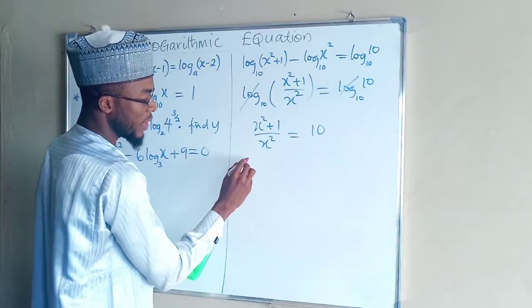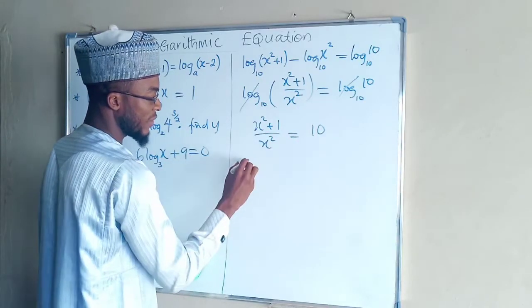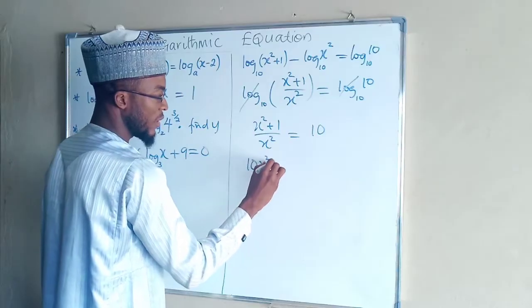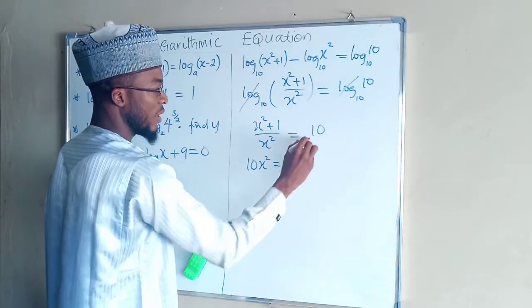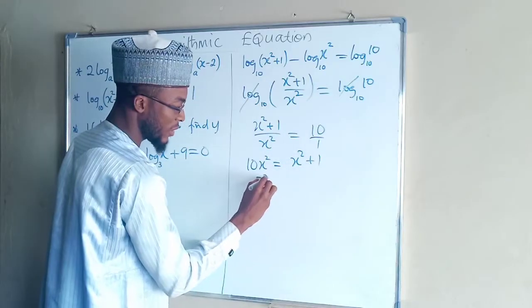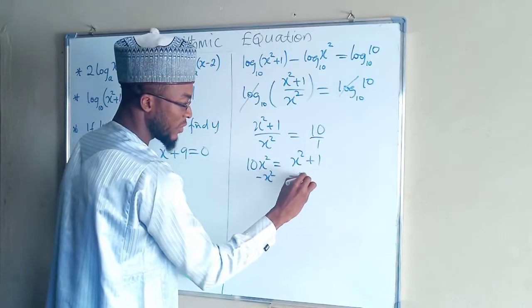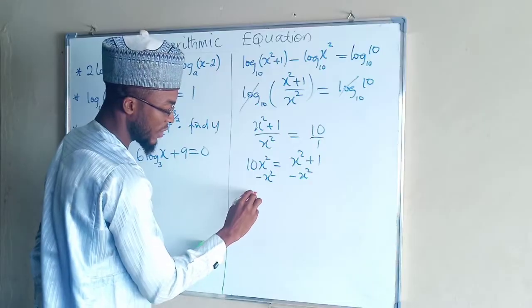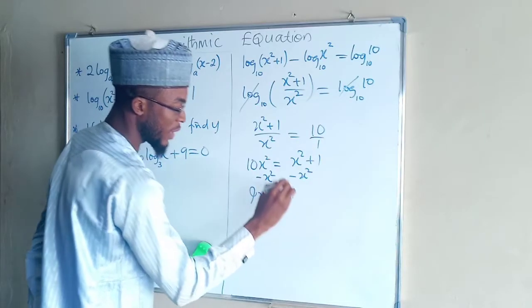So by cross multiplication we have this times this, 10 x squared, to be equal to this, x times 1, x squared plus 1 minus x squared. This is 9 x squared equals 1.